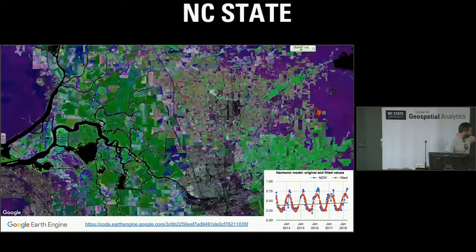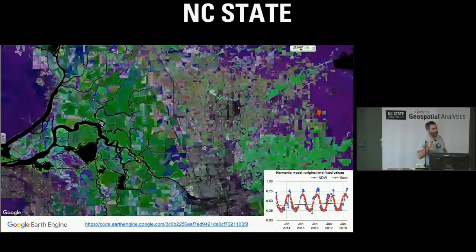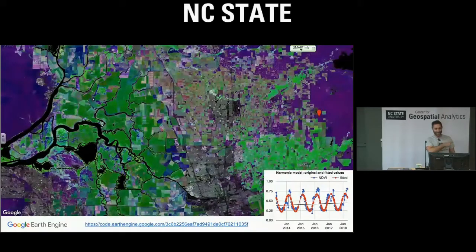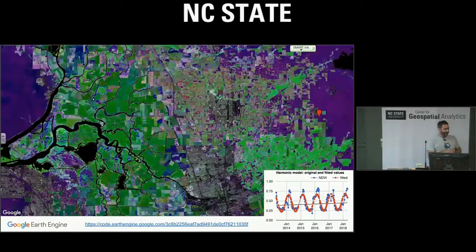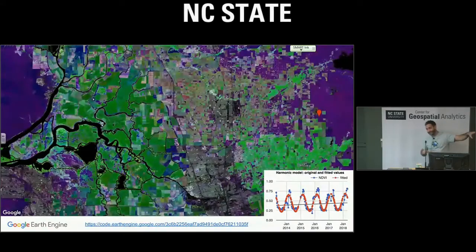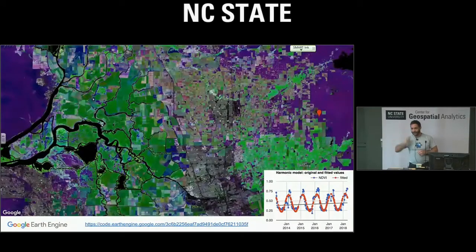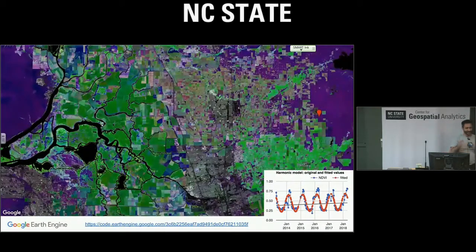At the bottom of the slide is a link to the code that generated this map. If you have the link to this lecture, you have the link to this code, and all of you can go get the same map and fiddle with it. You can get a new link and email it to your friends and collaborators. They'll see the same code, the same map, can tinker with the code, get a new link, and email it back. It's a really easy way to collaborate internationally just by emailing these links around.